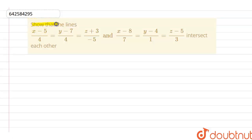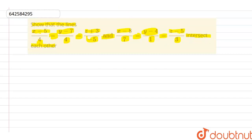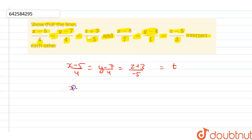The question is: show that the lines (x-5)/4 = (y-7)/4 = (z+3)/(-5) and (x-8)/7 = (y-4)/1 = (z-5)/3 intersect each other.